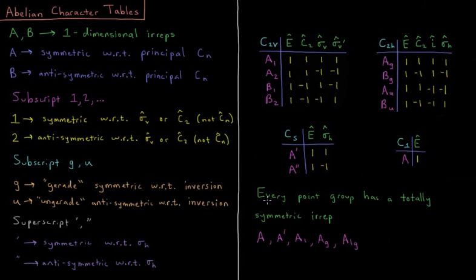Also of note before we leave here is that every point group has a totally symmetric irreducible representation. That would be a column which has nothing but ones up here. So A1, AG, A prime, A, A1G, whatever it happens to be. Every point group has its first irrep is ones all the way across.